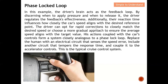The driver can opt for rapid correction — accelerating quickly to closely match the desired speed — or choose a more gradual approach to ensure the average speed aligns with the target value without overshooting. His action, coupled with the car's control, forms a system closely analogous to a Phase-Locked Loop. Replace the human with an electrical circuit that senses the speed error, add another circuit that tempers the response time, and couple it to the accelerator — that's a typical cruise control system.